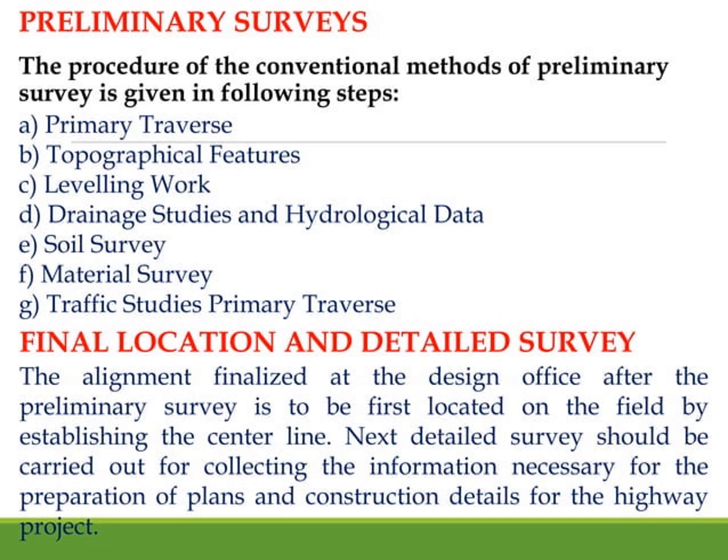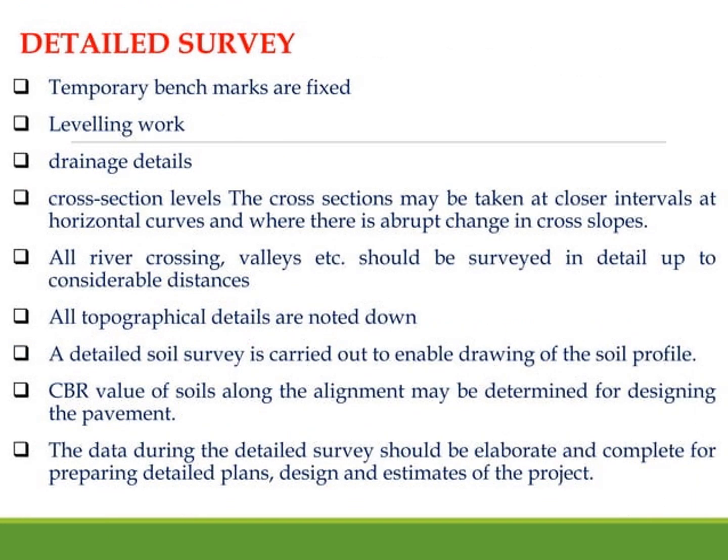Final location is established on the field by establishing the center line of the alignment. In detailed survey, temporary benchmarks are fixed, leveling work is carried out, drainage details are fixed, horizontal curves are marked at closer intervals, levels are given, and river crossing values are surveyed. Soil profile drawings are prepared, and the CBR value of the soil is obtained. Then the alignment is designed.